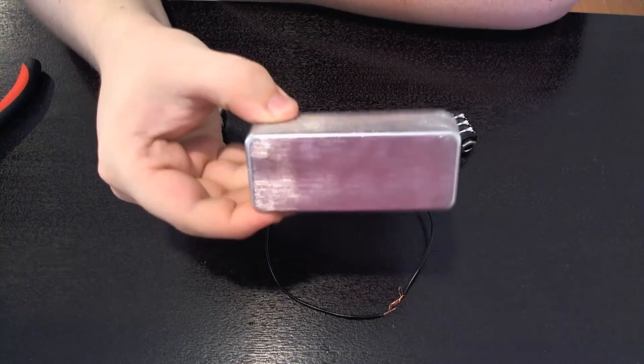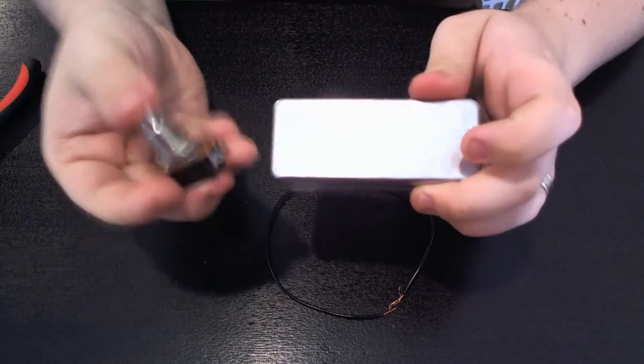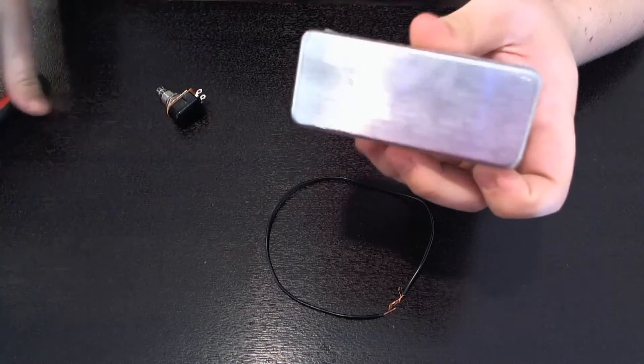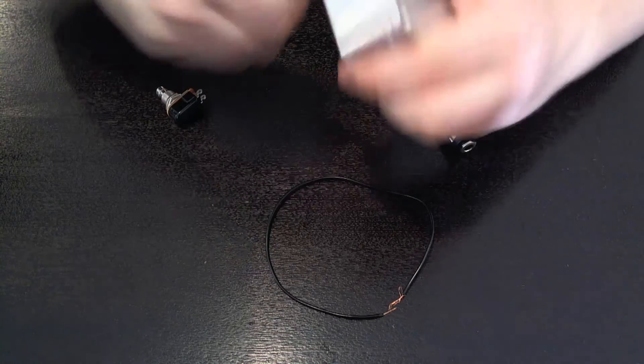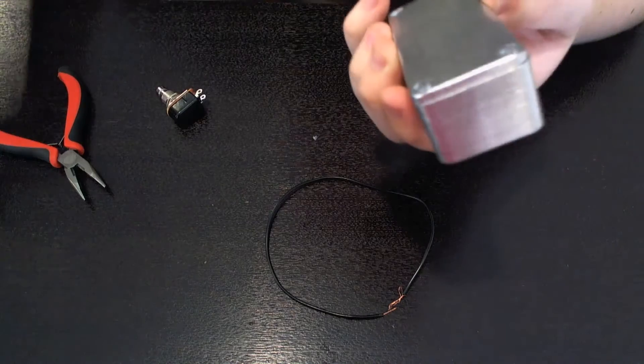So what we need to do now is mark out where we're going to drill the holes in the enclosure for the momentary switches and for the ports. Now it's really important that you do this before you go drilling or else you can end up drilling into the wrong spot and then you'll need to get yourself a new enclosure.